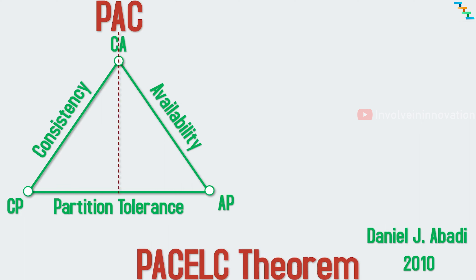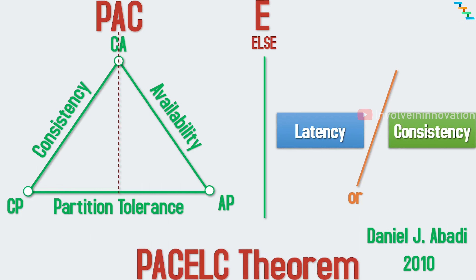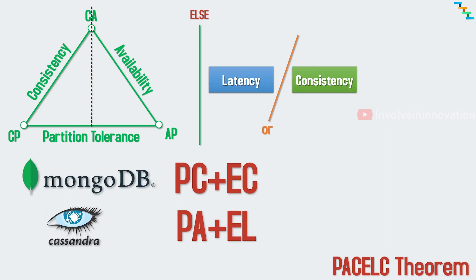PACELC is summarized as follows: in the event of node failure, a distributed system must choose between availability and consistency — this is what PAC stands for. Else, when running normally, it must choose between latency or consistency. Latency is how much time is needed for each request to process successfully. MongoDB is classified as a PC/EC system — during normal operation and partition failures it emphasizes consistency. Cassandra is a PA/EL system — during partition failure it favors availability, and during normal operation it gives up consistency in favor of lower latency.